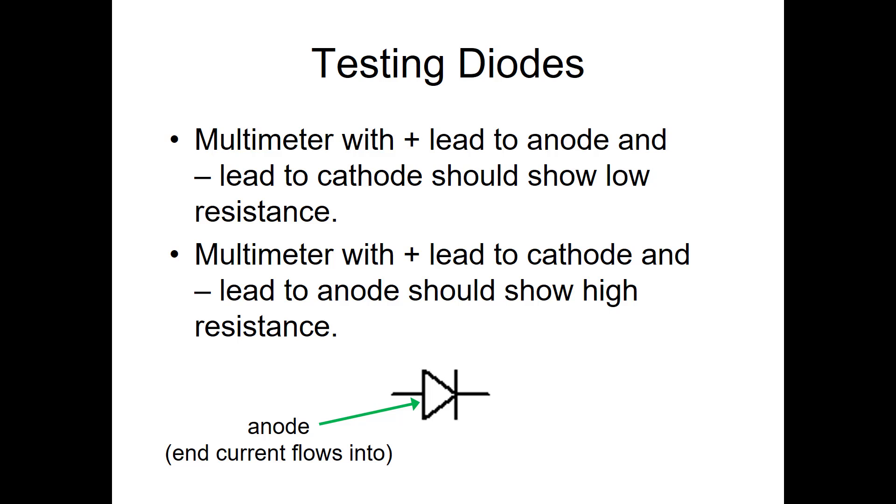Now to help you remember anode and cathode, anode is the end that the current flows into, and the cathode is the end the current flows out of. When semiconductor materials and diodes were first being developed for electronics, the researchers were thinking of the flow of electrons, which is what really happens. However, in electronics, for a hundred years, things have been labeled with conventional flow, considering current flowing from positive to negative. So diodes are labeled that way and should be connected in a circuit using conventional flow.